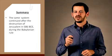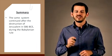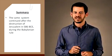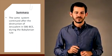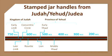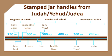Furthermore, the same administrative systems continued after the destruction of Jerusalem in 586 BCE during the Babylonian rule. As you will learn in the following units, the system lasted for a much longer time, for an additional 400 years, as long as Judah was under imperial rule.